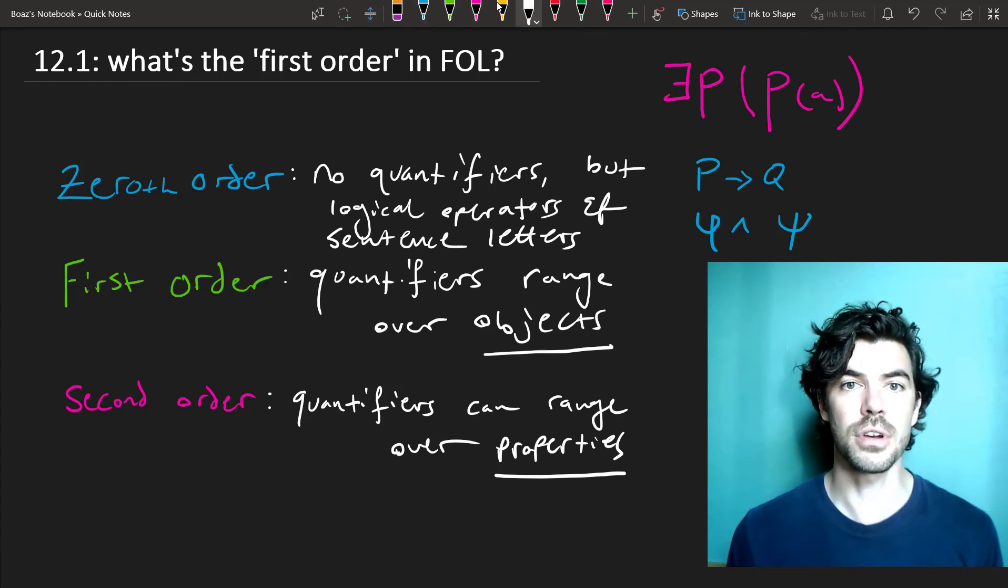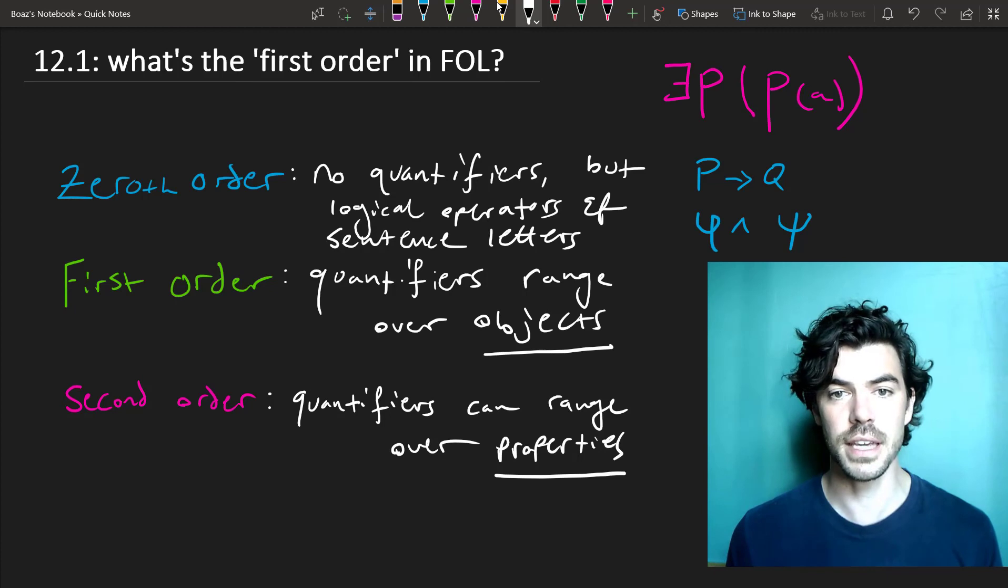So what puts the first-order in first-order logic is that our quantifiers range over objects, and this is going to be an important thing to keep in mind in what follows because we're going to be talking about tautologies in first-order logic specifically.